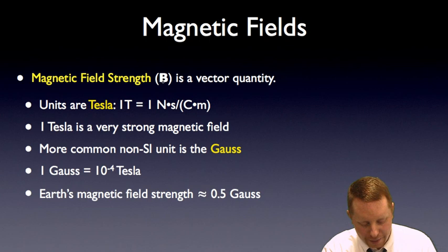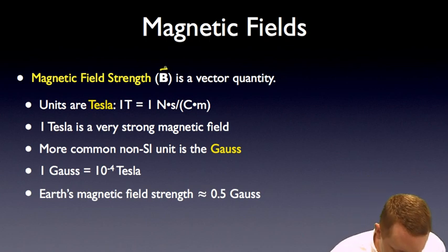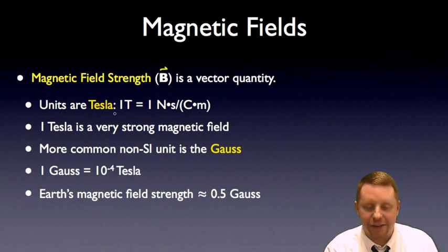Magnetic field strength, capital B, is a vector quantity. The units are tesla, where one tesla is a newton second per coulomb meter. And that's a very strong magnetic field. So a more common non-SI unit is the gauss, where one gauss is about 10 to the minus 4 tesla. And the Earth's magnetic field strength, to give you a flavor, is about half a gauss.